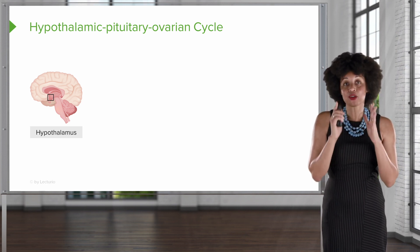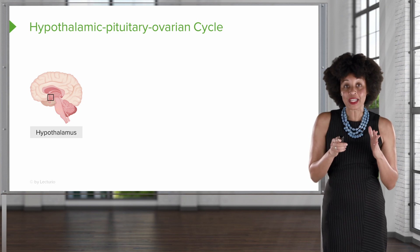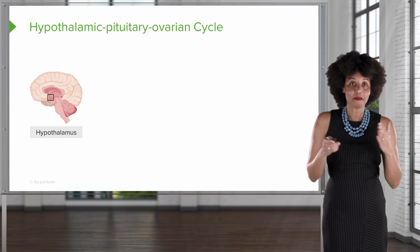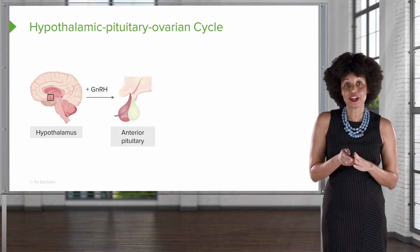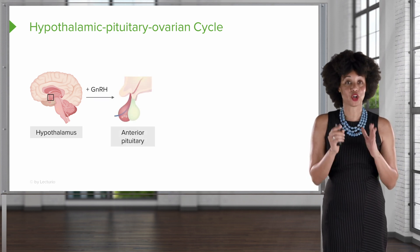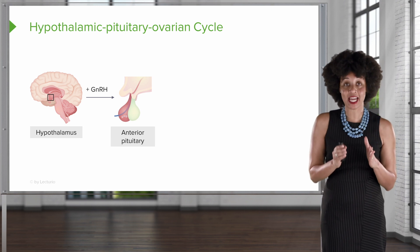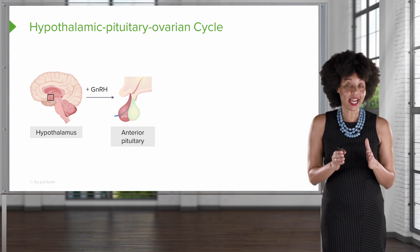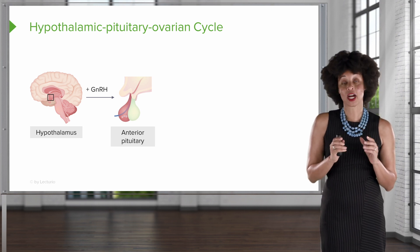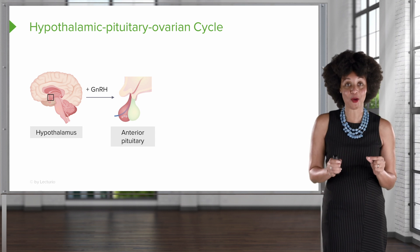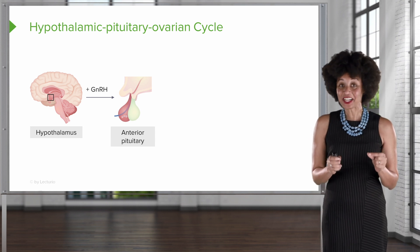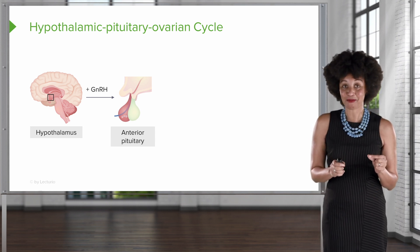Within the menstrual cycle, there is a neurotransmitter released about every 60 minutes, and that neurotransmitter is called GNRH — gonadotropin releasing hormone. Try to say that three times fast.